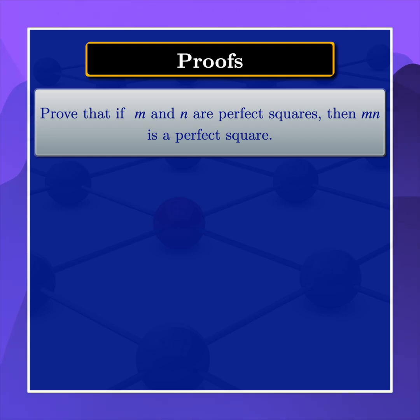I'm going to prove that if m and n are perfect squares, then m times n is a perfect square.